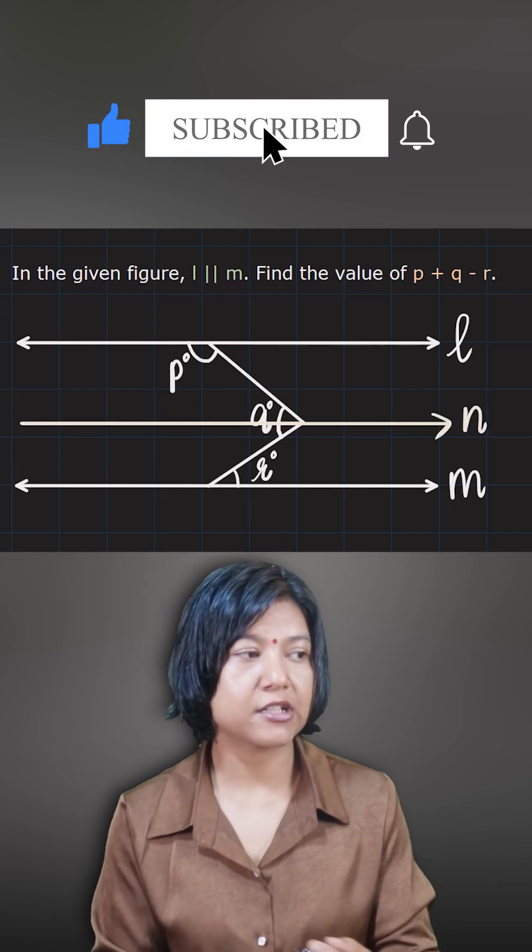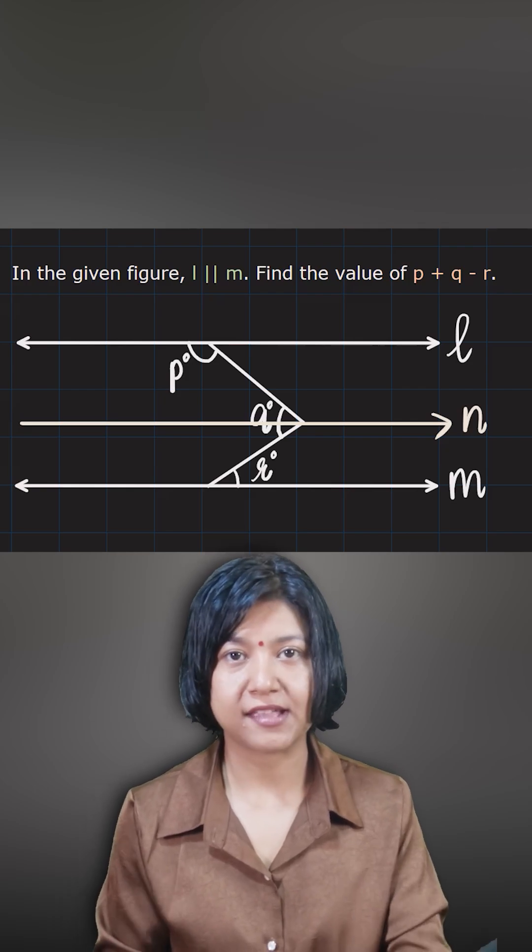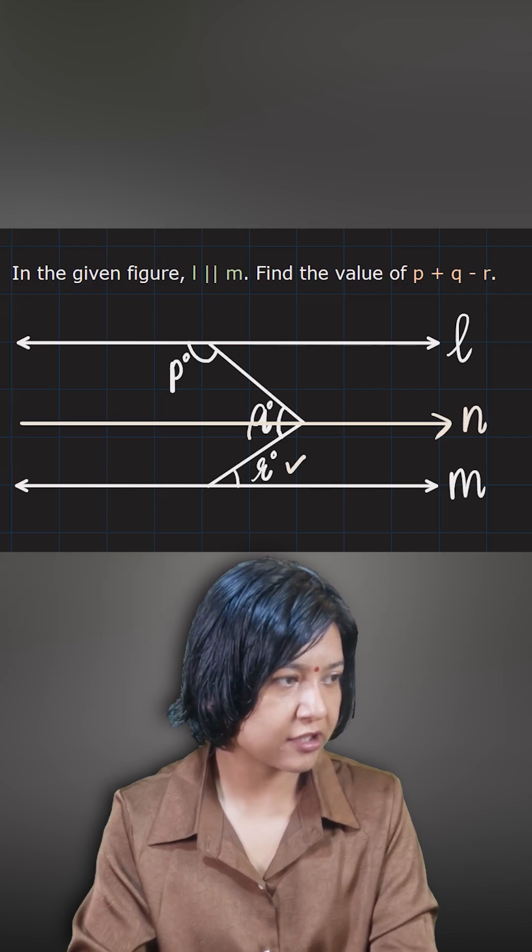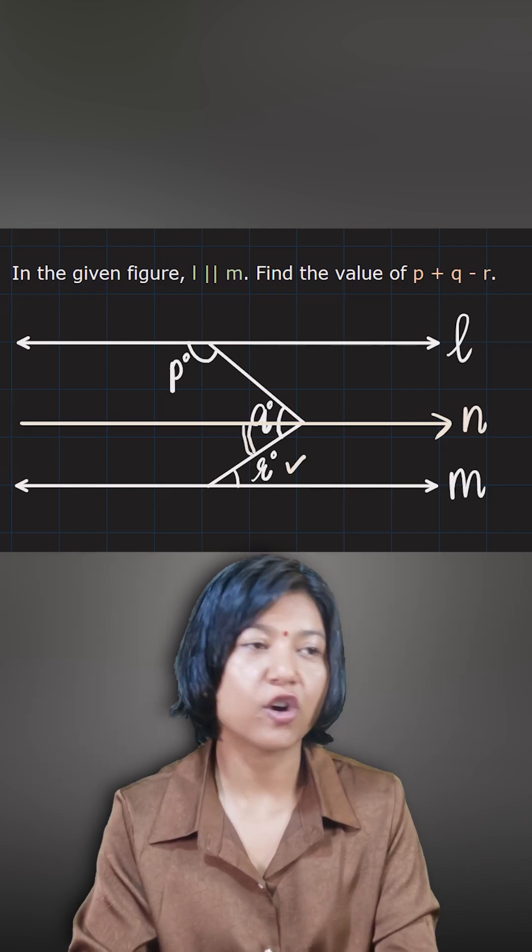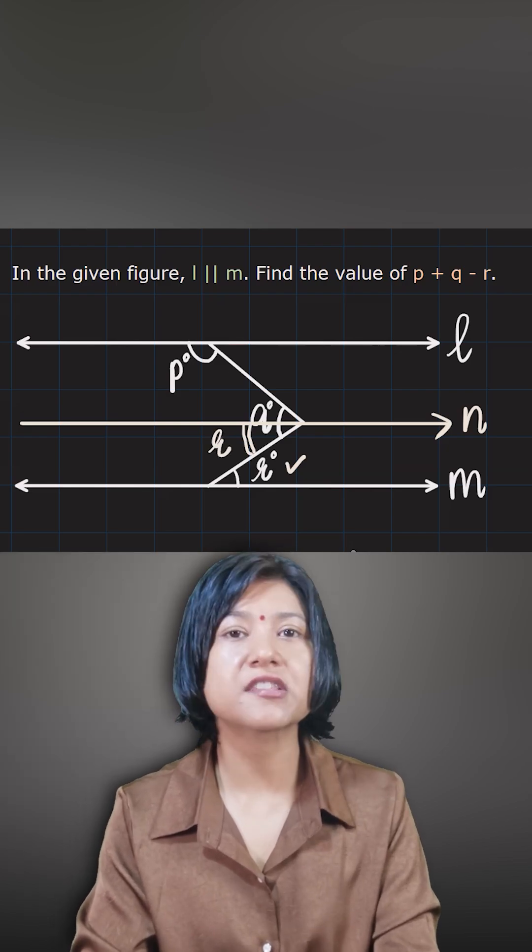Now if you look at this line with respect to this line, we have some angles coming up. We know parallel lines always have this pair of equal angles. So if you look at angle r, this r will exactly be equal to the angle right here because of alternate angle property. So this becomes angle r.